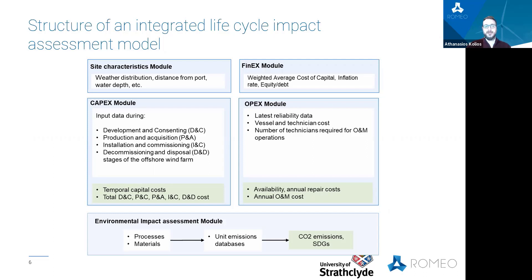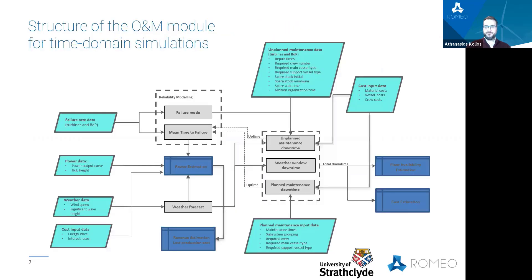Each of the modules includes a number of sub-modules, which allow external tools to be integrated in the analysis. Now, the O&M module is the core of the impact assessment tool, as it allows time domain simulations to be performed, simulating the reliability performance of the asset throughout its service life. The main modules are the reliability module, the weather forecasting module, and the maintenance module.